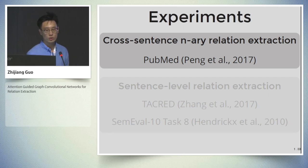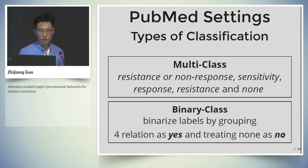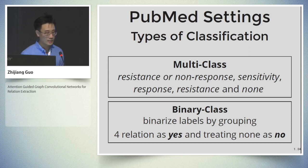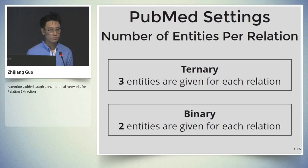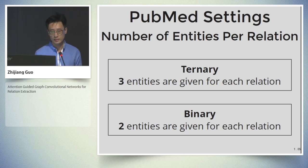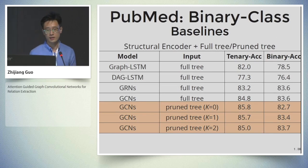We evaluate our model on two different relation extraction tasks across three datasets. For the cross-sentence n-ary relation extraction task, we use the CDR-Med dataset. This dataset has two types of classification settings: the multi-class setting with five different relation labels, and the binary class setting which binarizes the five relation labels into two labels — yes and no. The CDR-Med dataset also has two sub-datasets: a ternary dataset where three entities are given for each relation, and a binary dataset where the number is two.